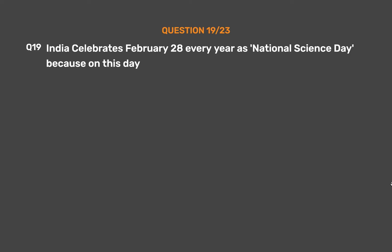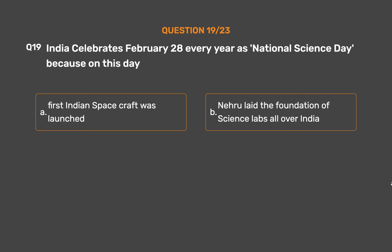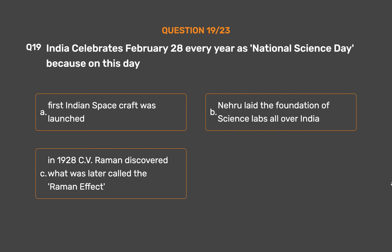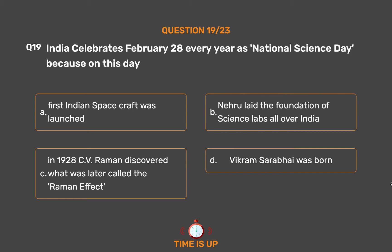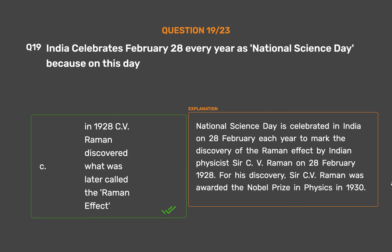Question No. 19. India celebrates February 28th every year as National Science Day because on this day: Option A, First Indian spacecraft was launched; Option B, Nehru laid the foundation of science labs all over India; Option C, In 1928, C. V. Raman discovered what was later called the Raman effect. National Science Day is celebrated in India on 28th February each year to mark the discovery of the Raman effect by Indian physicist Sir C. V. Raman on 28th February 1928. For his discovery, Sir C. V. Raman was awarded the Nobel Prize in Physics in 1930.